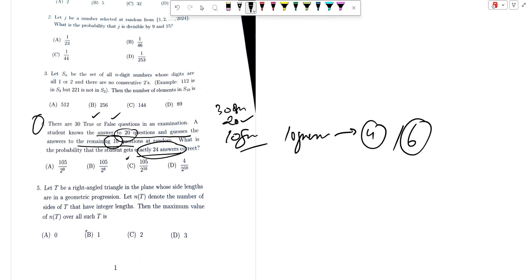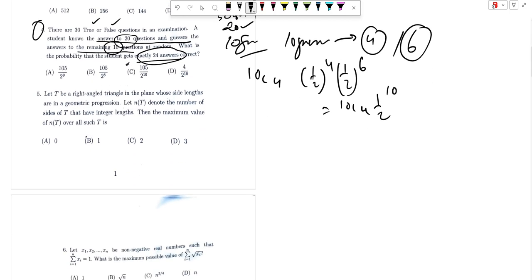Here we can go for 10C4 and half to the power 4 into half to the power 6. That is 10C4 and half to the power 10. This is one part, the probability of getting 6 correct and 4 incorrect. Then in this case, 10C6, that is half to the power 10.